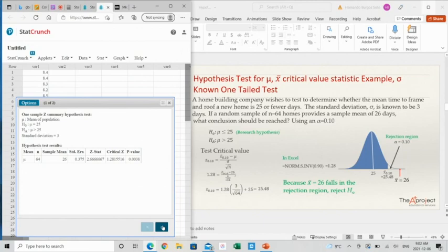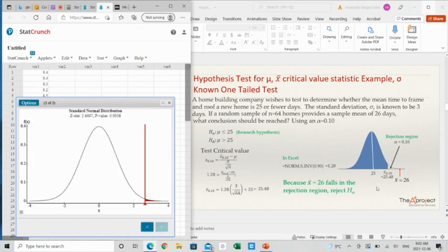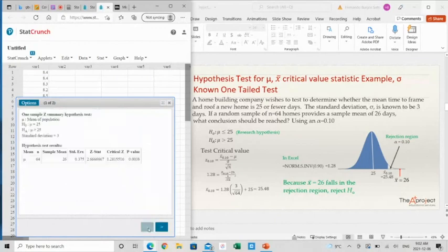If you want to see the plot, you need to click here at the bottom. This is the plot that I have here. Important things are here. They have the mean mu, n equals 64. The sample mean was 26. The standard error was 0.375. The standard error is 3 over the square root of 64. Sigma divided by the square root of n.